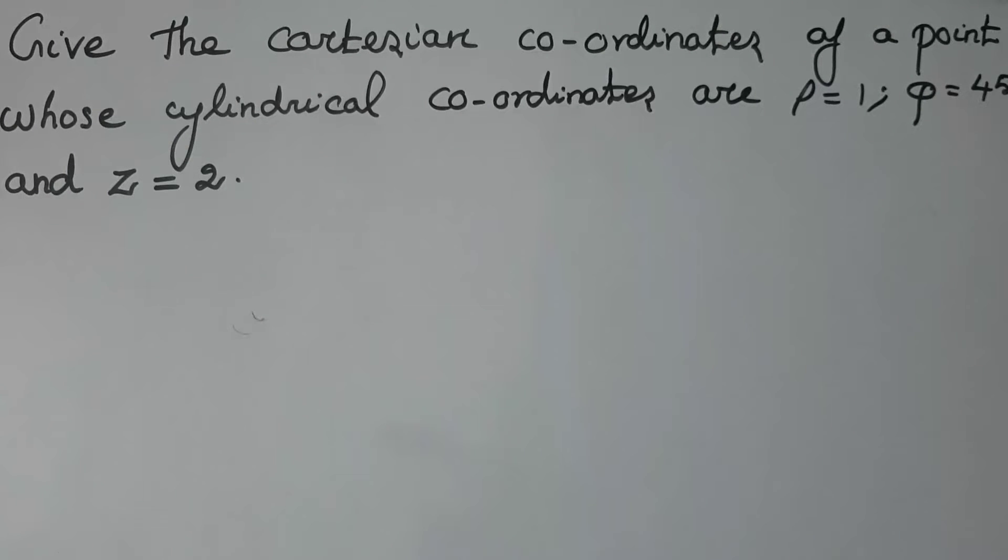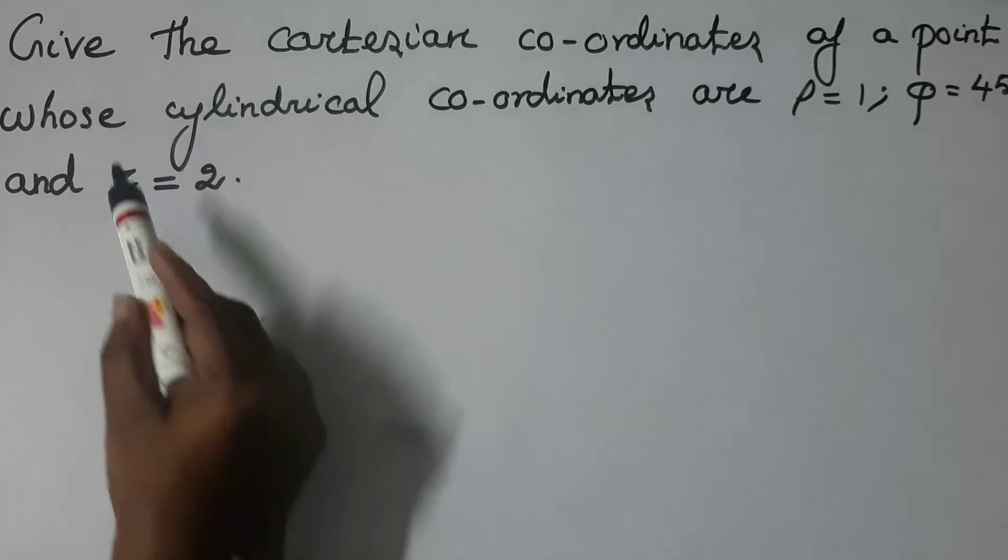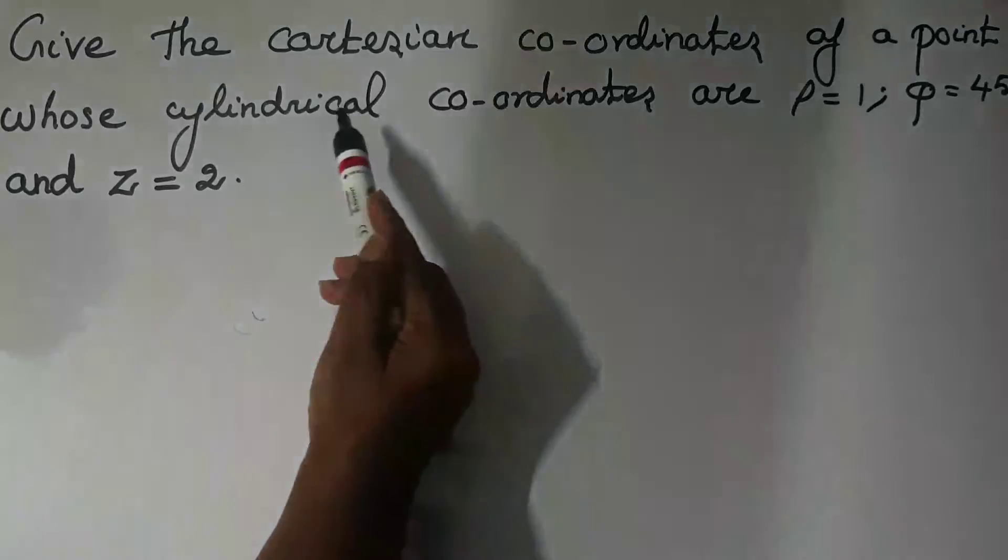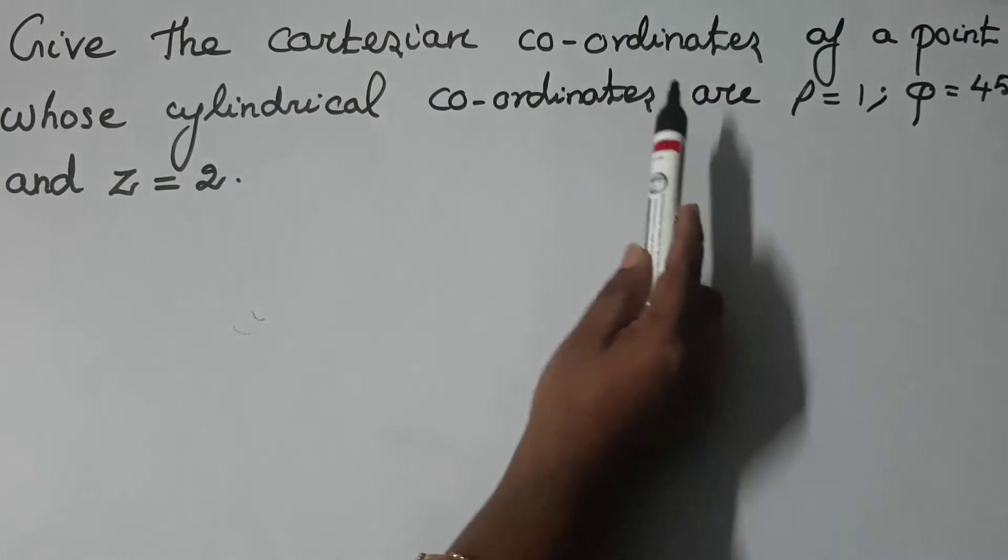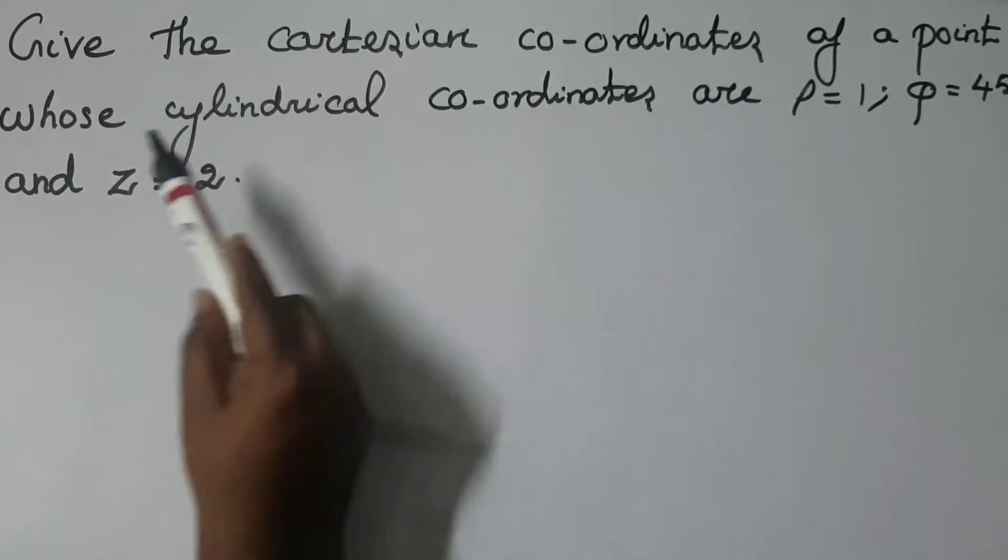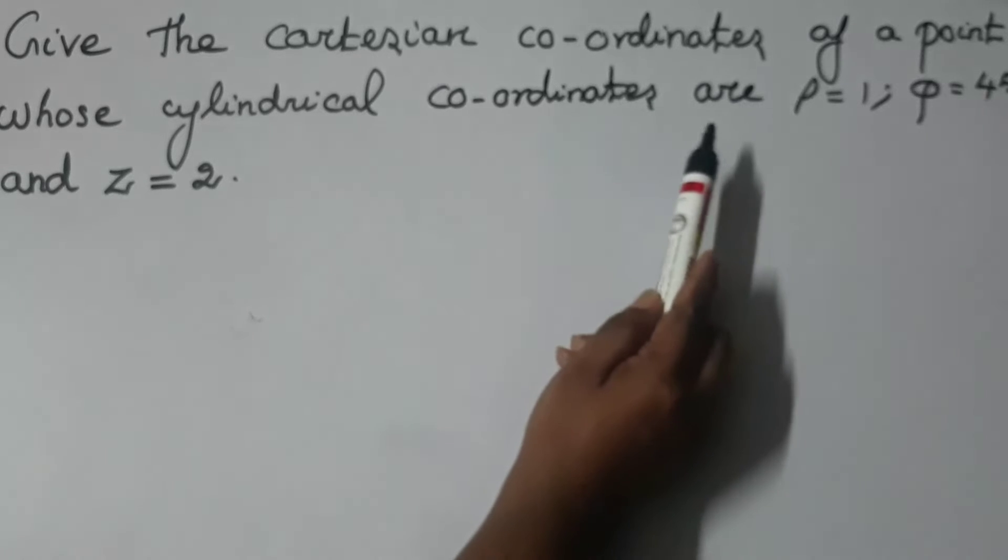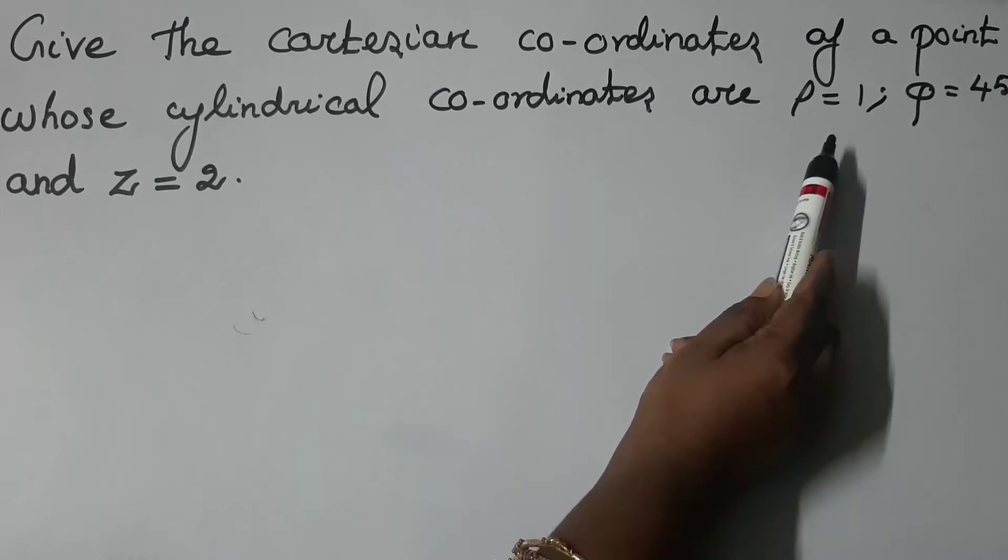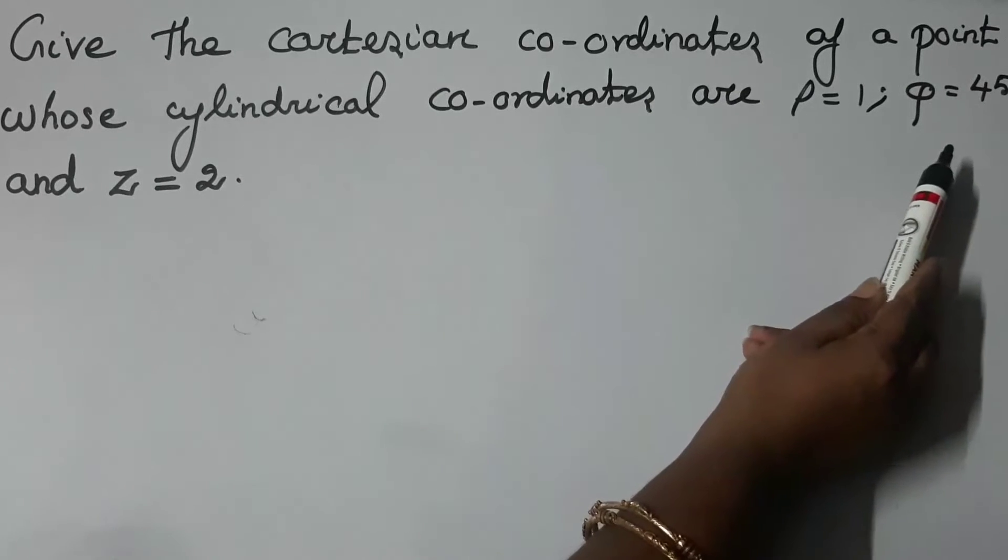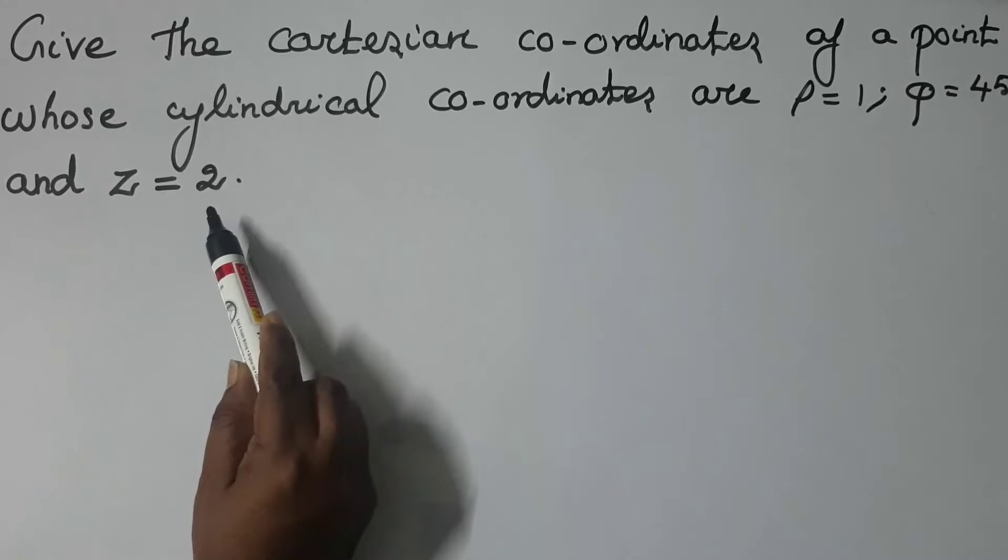Hello everyone. Today we are going to discuss a problem relevant to coordinate systems. So this is the question: Give the Cartesian coordinates of a point whose cylindrical coordinates are ρ equal to 1, φ is equal to 45 degrees, and z is equal to 2.